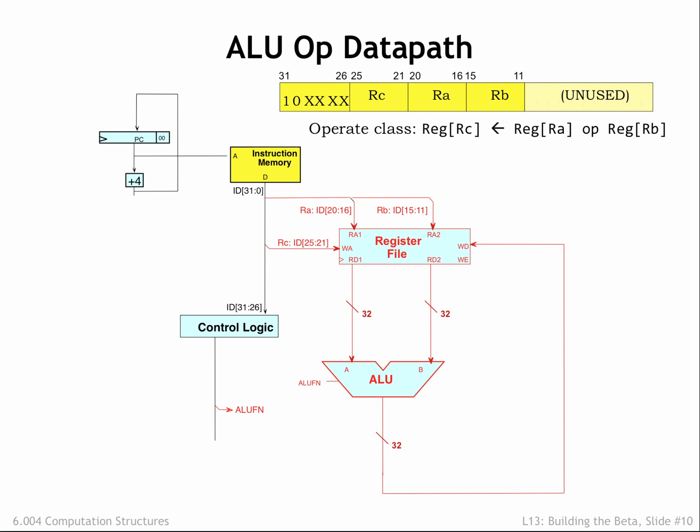The ALU-FN control signals tell the ALU what operation to perform. These control signals are determined by the control logic from the 6-bit opcode field. Let's assume that the control logic is implemented using a read-only memory, where the opcode bits are used as the ROM's address and the ROM's output are the control signals. Since there are 6 opcode bits, we'll need 2 to the 6, or 64 locations in the ROM. We'll program the contents of the ROM to supply the correct control signal values for each of the 64 possible opcodes.